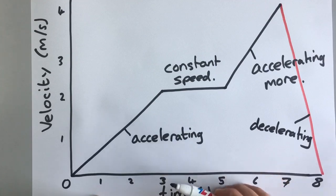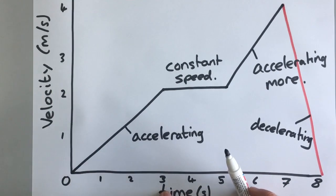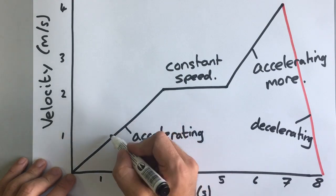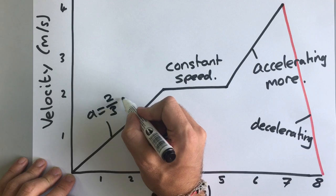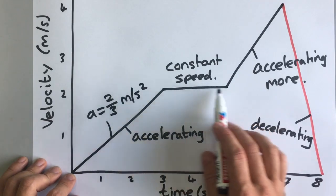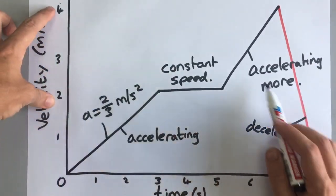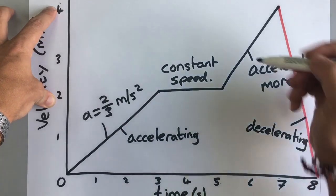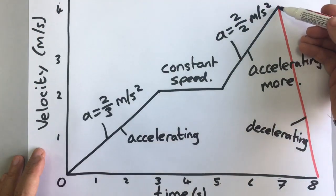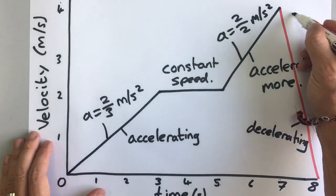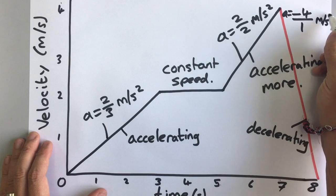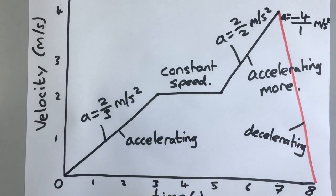You can calculate the acceleration because acceleration equals change in velocity divided by time. In the first section, the change in velocity is two and the time taken is three, so the acceleration is two divided by three meters per second squared. Here at constant speed, acceleration is zero. In the next section, the change in velocity is two and the time is two seconds, so acceleration is two over two — one meter per second squared. At the end he goes from four to zero, so the change in velocity is minus four divided by one second, giving minus four meters per second squared. The acceleration is negative because he is slowing down.